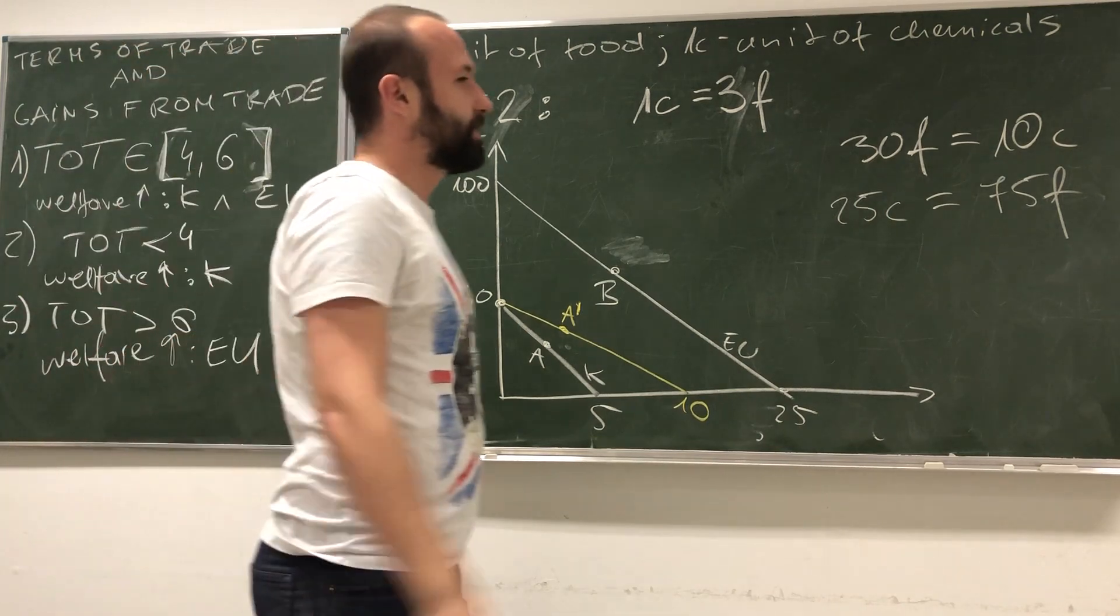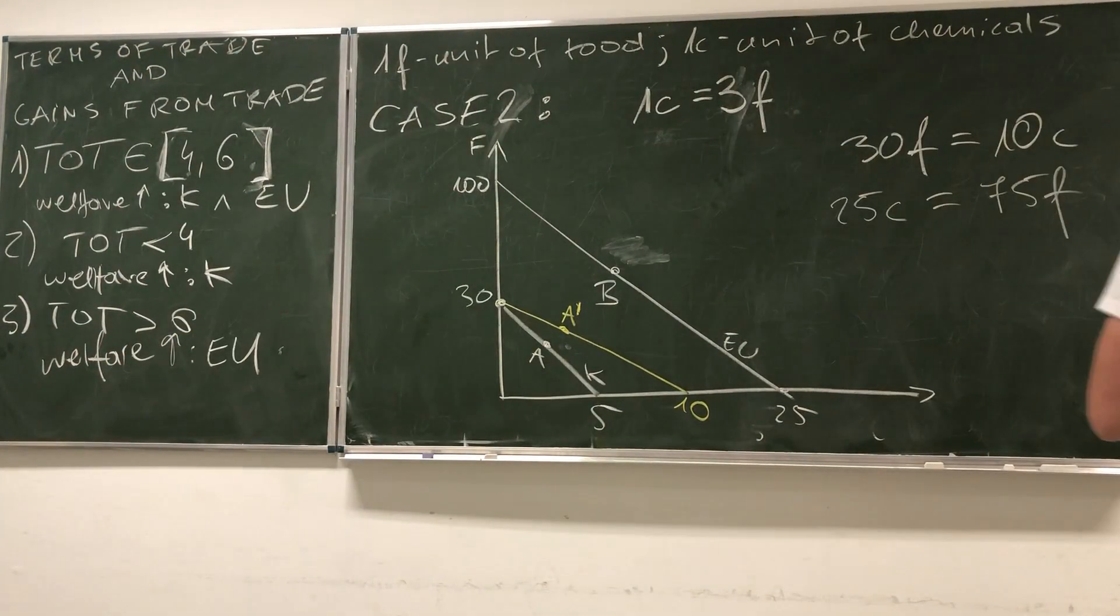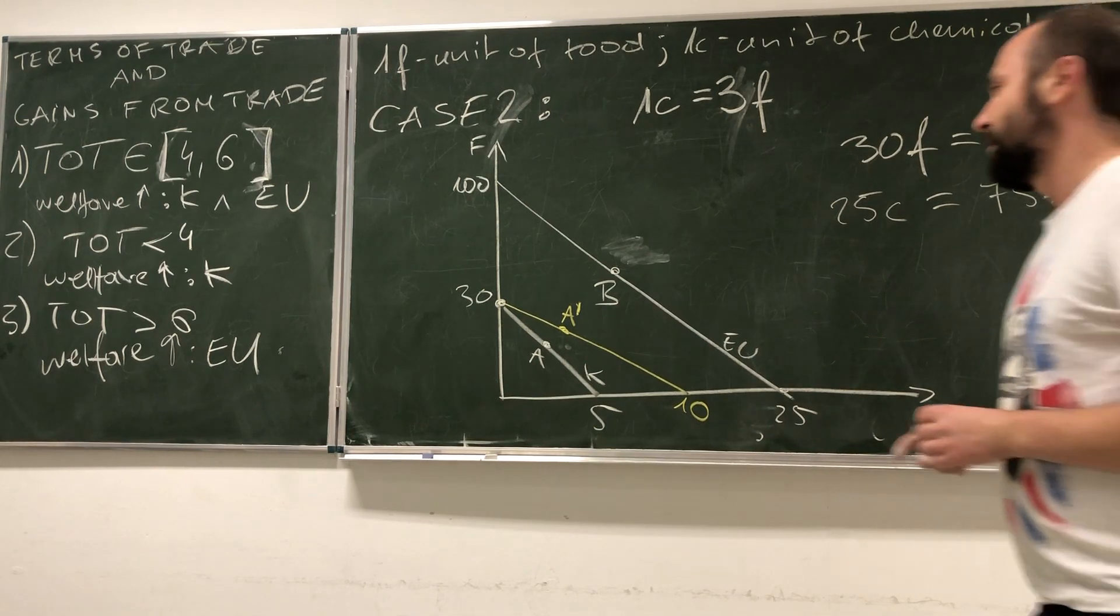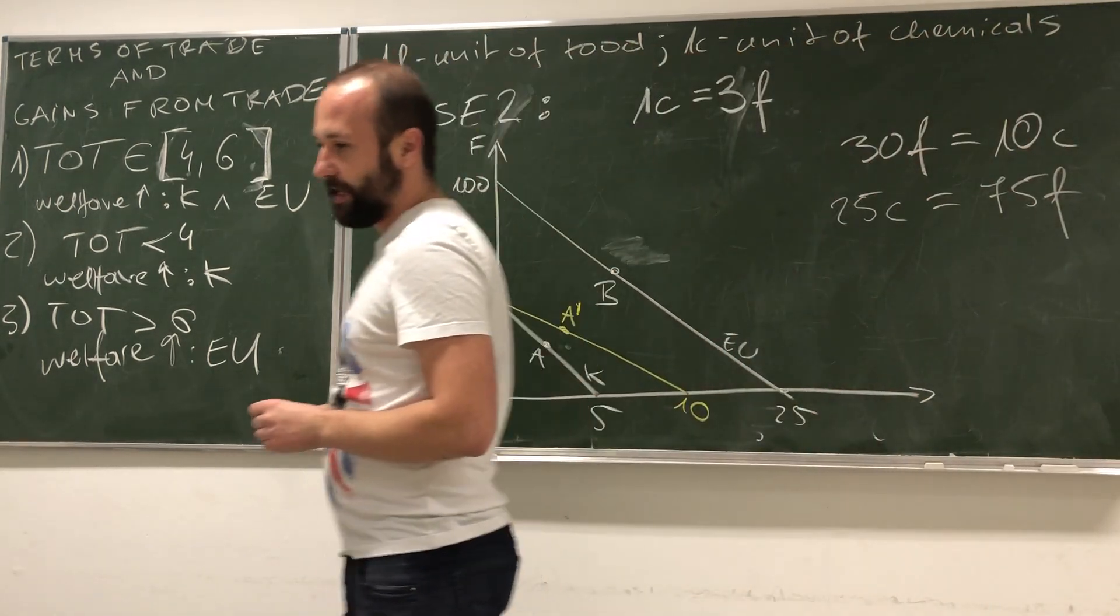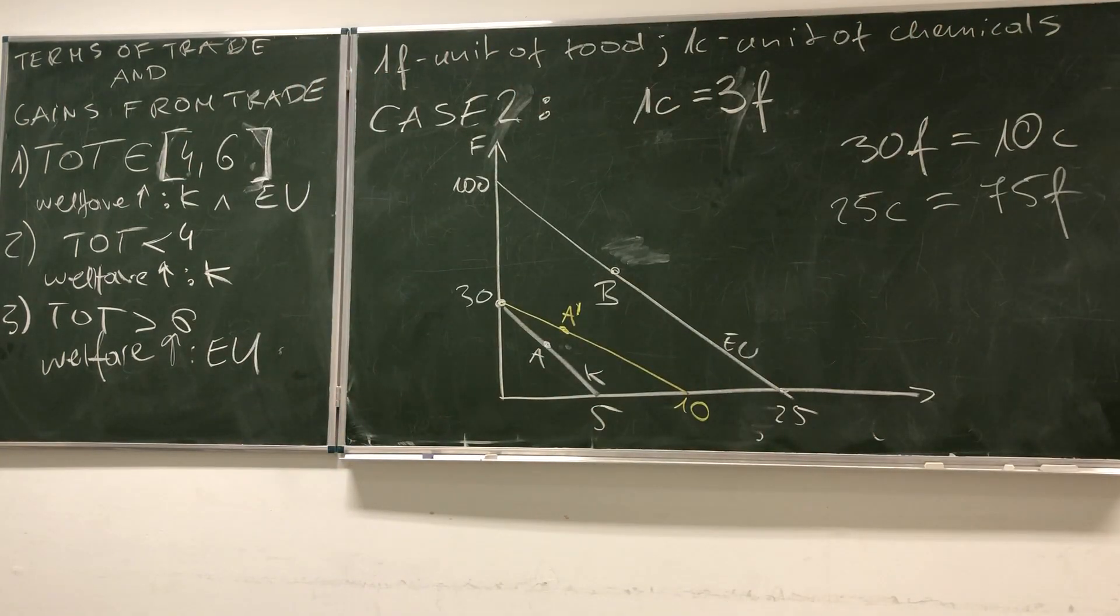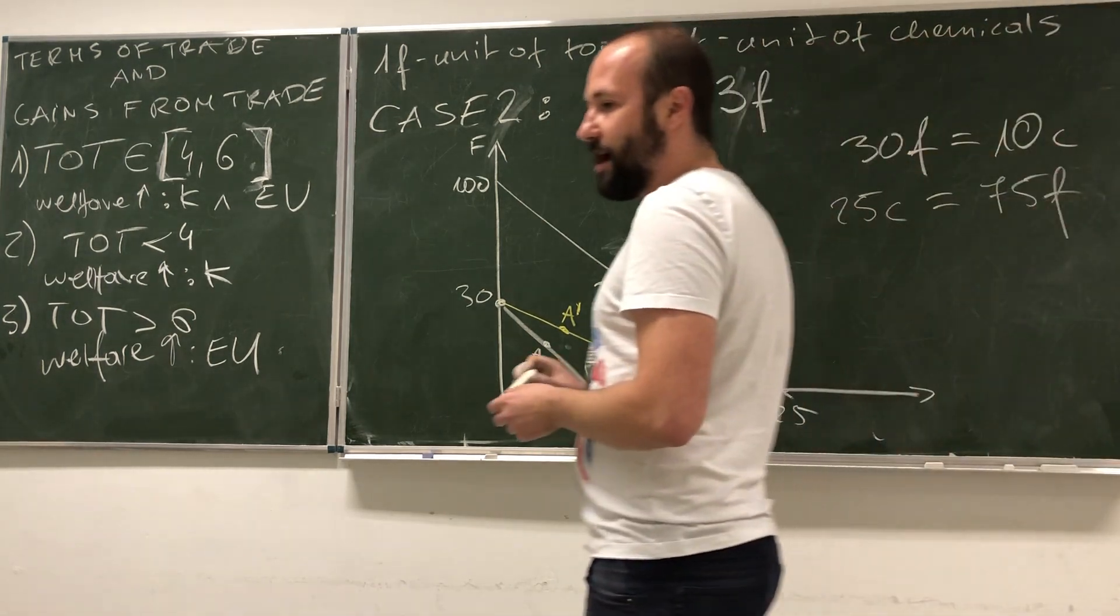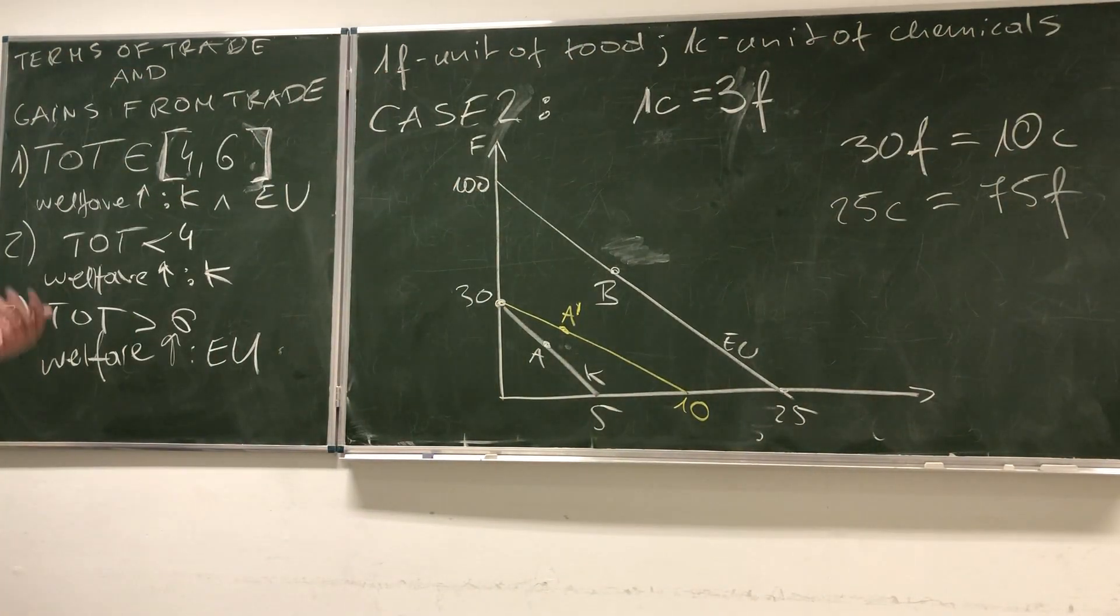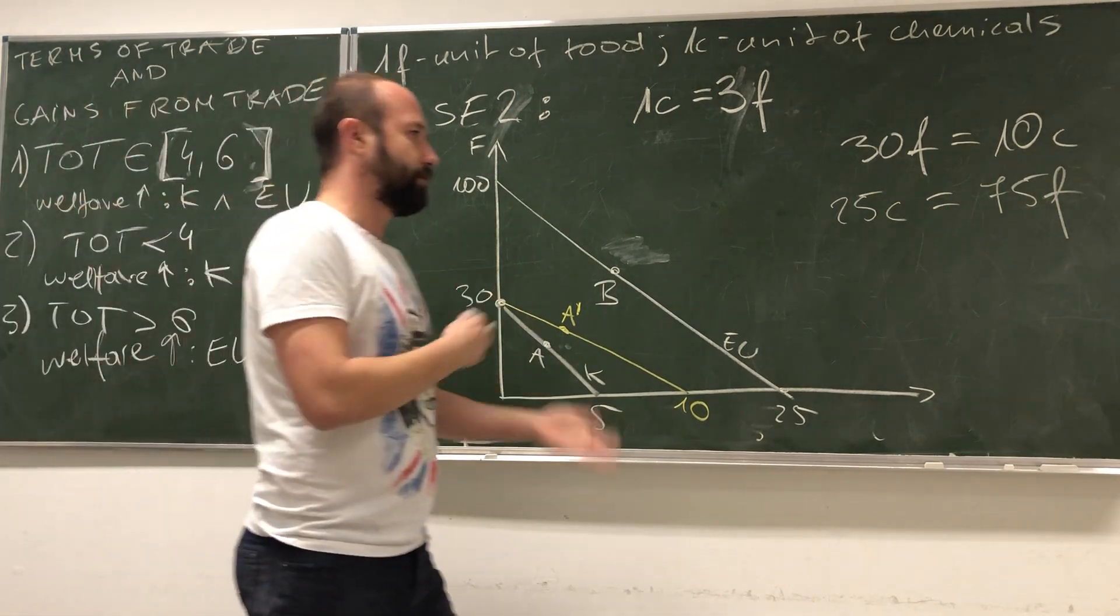Please try to do on your own a situation with different terms of trade and try to see that in the last case now the only beneficiary of trade will be European Union. But this brings us to an important question: what will decide about what are the terms of trade? This is a more complex question that we can actually answer within this framework. But we will try to answer it a little bit later as we go on with the course.